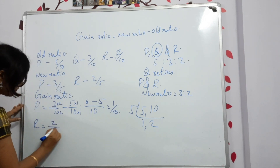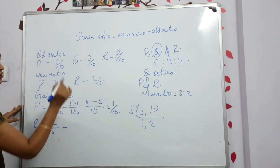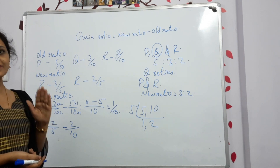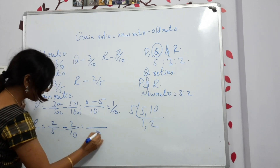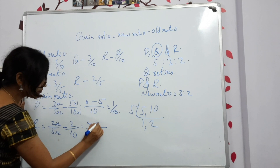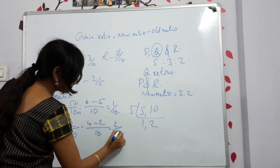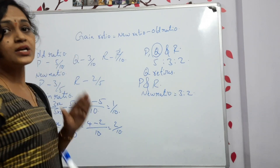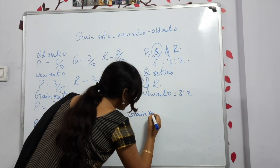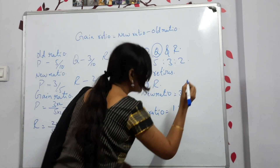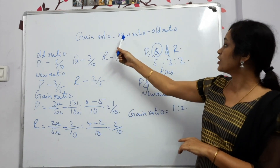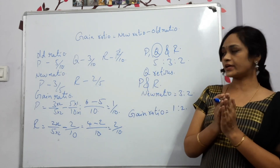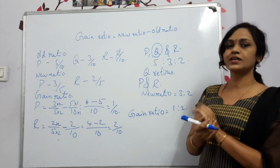For R: new ratio is 2/5, old ratio is 2/10. LCM is 10, so 2/5 becomes 4/10. Then 4/10 minus 2/10 = 2/10. So the gain ratio is 1/10 for P and 2/10 for R, which means the gain ratio is 1:2. Write down the formula - new ratio minus old ratio - find the old and new ratios, subtract them, and you get the gain ratio.